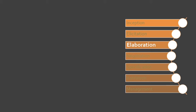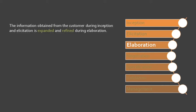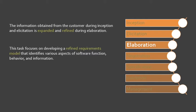This time, we will talk about the third task, which is what we call elaboration. The information taken from the user during inception is expanded and refined in the elaboration part. This task focuses on developing a refined requirements model that identifies the various aspects of software function, behavior, and also the information.